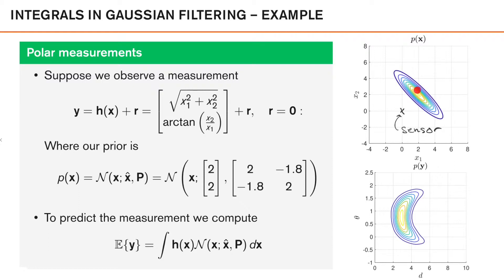Now, let us consider what happens to the distribution of the measurements if x is distributed like this. When x is close to its mean, the angle theta would be roughly pi over 4. And the distance d is fairly close. Now, if x is out further, we have an angle which is larger, and the distance grows compared to what we had before. However, if x is elsewhere, the angle is fairly small, close to zero, but the distance grows again. So by following this argument, you can understand that p of y, the distribution of the measurements, has this type of banana-shaped density, which is clearly not your typical Gaussian shape.